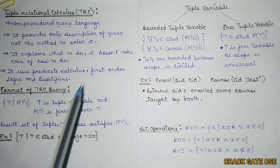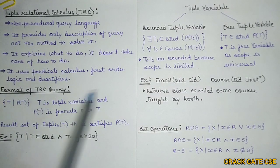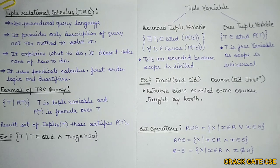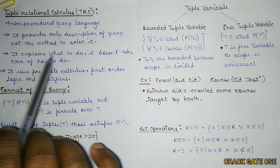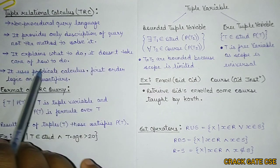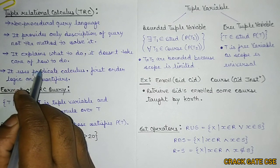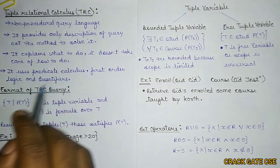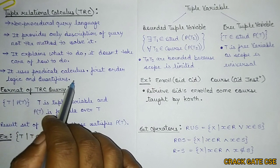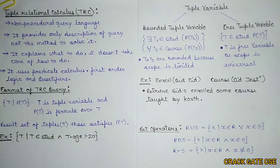TRC is used to describe or represent a particular statement into a query format. It explains what to do — it doesn't take care of how to do. So it deals with what exactly we need to do, but it does not provide any method or technique to solve that particular query. It does not deal with how to do; it deals with what to do. It uses predicate calculus, first order logic, and quantifiers.